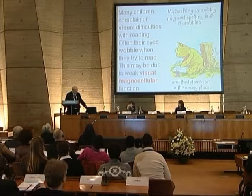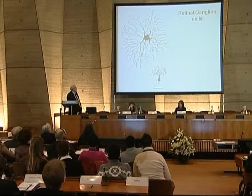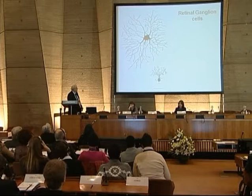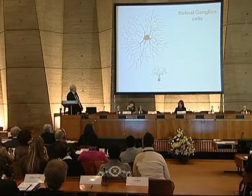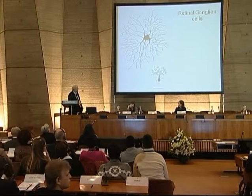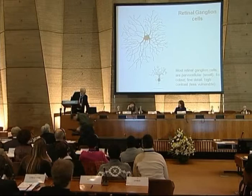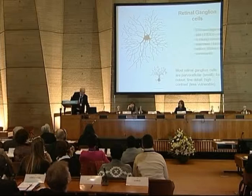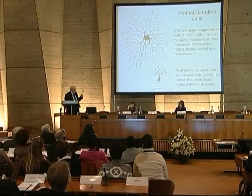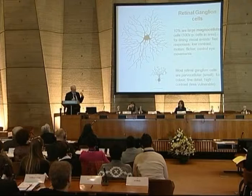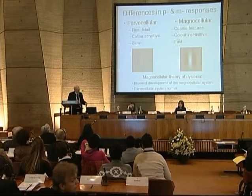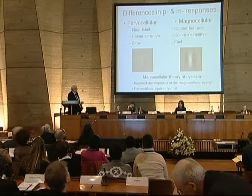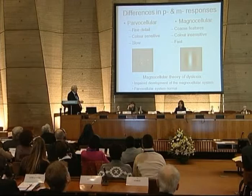There are two kinds of retinal ganglion cells: magnocells, which are large, and parvocells, which are small. The area from which a magnocell receives input from the retina is something like 100 times the area of a parvocell, so it's good at detecting blobs. Most retinal ganglion cells are parvocells — the small ones important for fine detail and color. But the large cells, about 10% of retinal ganglion neurons, are important for picking up changes in the visual environment — motion or flicker.